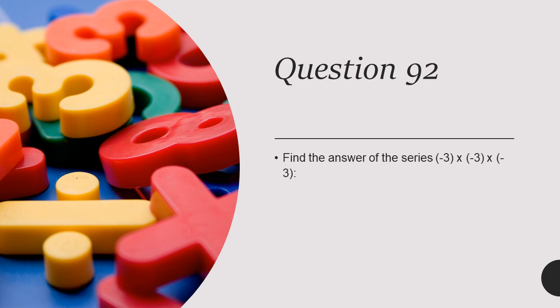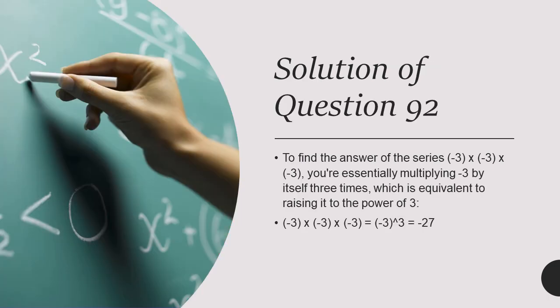Question 92: Find the answer of the series minus 3 multiplied by minus 3 multiplied by minus 3, minus 20 times. Pause the video to see the solution on this slide.